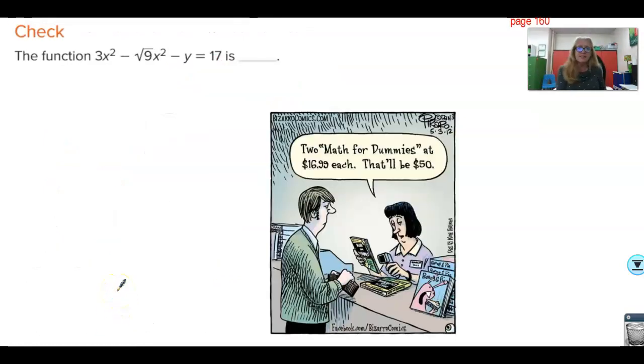Two math for dummies at $16.99 each. That would be $50. So they've given us another function here. But we need to simplify this to figure out if we can get it into y equals mx plus b form. This is 3x squared, which right away sets up red alerts for us because we know that any time you have a variable raised to the second power, you're going to end up with a parabola. If the x is squared, the parabola will point one way, and if the y is squared, it points another way. Both make parabolas, though.